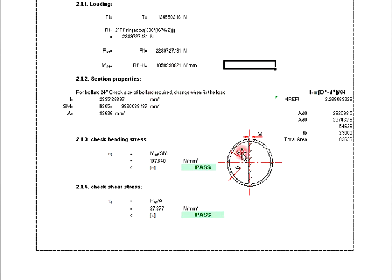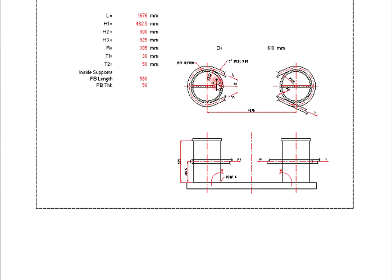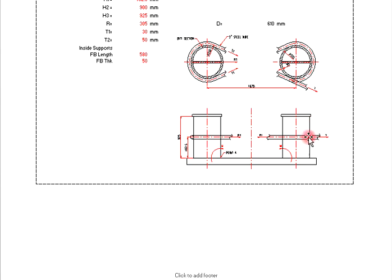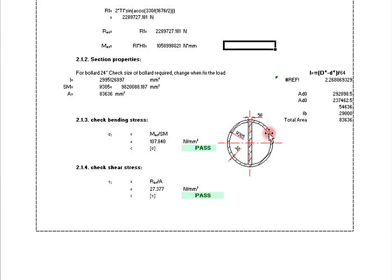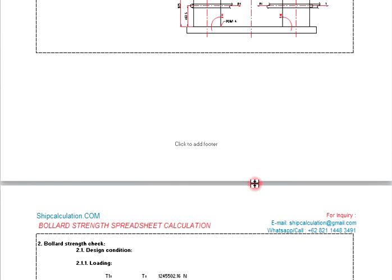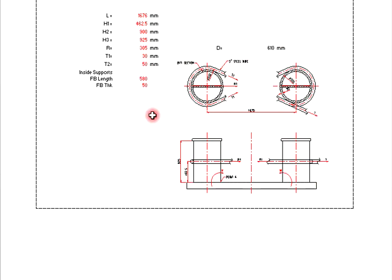Right now we need to check the section property of this bollard. Because we are using steel, we need to know the thickness, height, and diameter. This one is the thickness T1 — the thickness of the angle bar is 50 mm, so you get 50 mm.